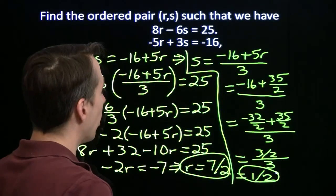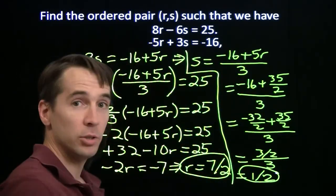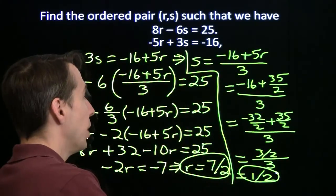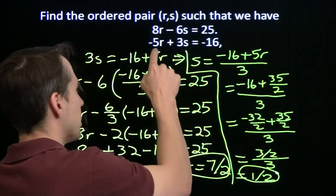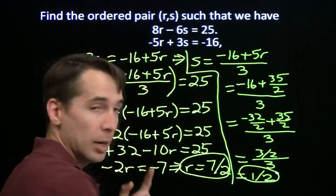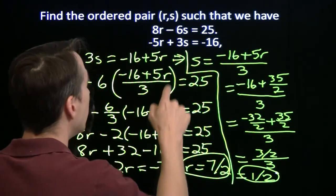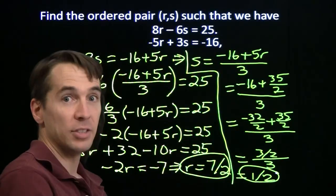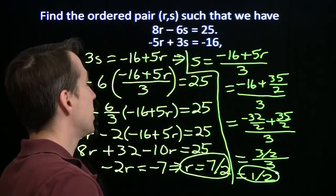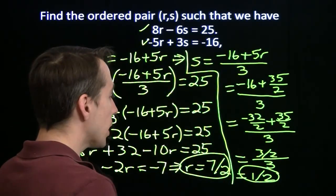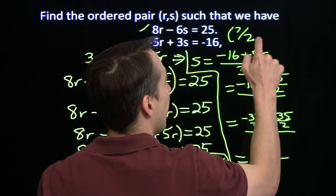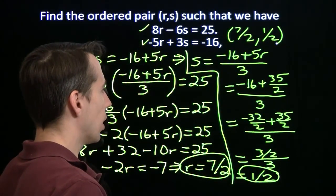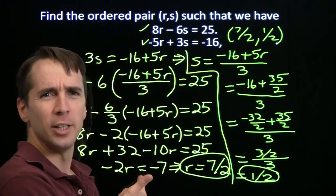We'll check these by putting them back up here. If I put 7 halves in here for r, 8 times 7 halves, 8 divided by 2 gives us 4, 4 times 7 is 28. So that's 28 minus 6 times a half. 6 times a half is just 3, 28 minus 3 is 25. Phew, that one works. Now we've got to try the second one, negative 5 times 7 halves. That gives us negative 35 over 2, plus 3 halves. Negative 35 over 2, plus 3 halves gives us negative 32 over 2. That's negative 16. So we've checked both of these work, and we've got our solution. Our solution is 7 halves, 1 half for r s. Phew, that was an awful lot of work. You know, I bet there's an easier way to do this problem.